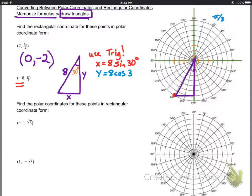So we just have to use trig now, you guys already know that Sokotoa, so sine of 30 is x over 8. If we multiply both sides by 8, you get x equals 8 sine of 30, and y equals 8 cosine of 30.